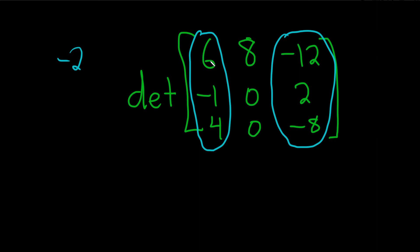Negative 2 times 6 is negative 12. Negative 2 times negative 1 is 2. Negative 2 times 4 is negative 8. So we can use negative 2 and multiply each entry in that first column to get the third column.